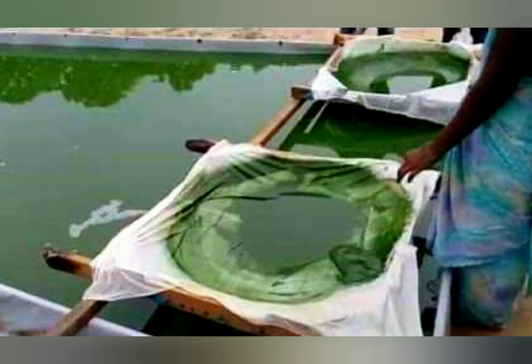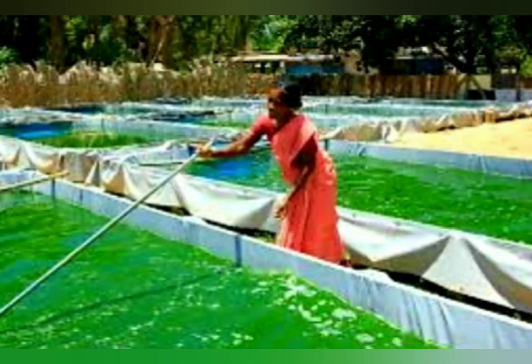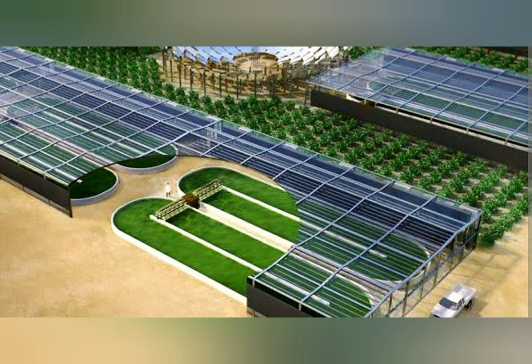Algae like chlorella, cynodesmus, silastrum and spirulina have been found to be very suitable for mass cultivation and utilization. The advantages in using algae include simple cultivation, effective utilization of solar energy, faster growth and high protein and nutrient content. Spirulina is an extremely beneficial algae in this regard.